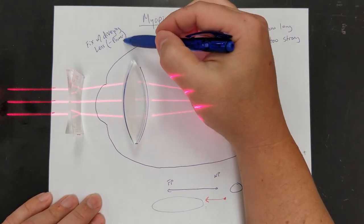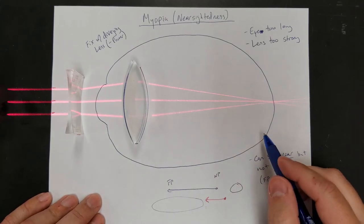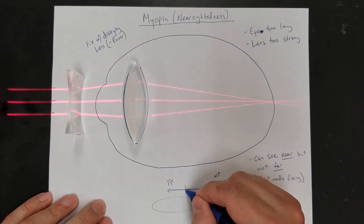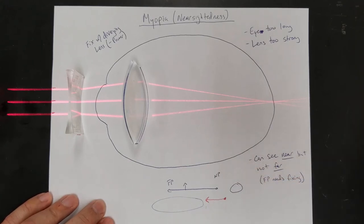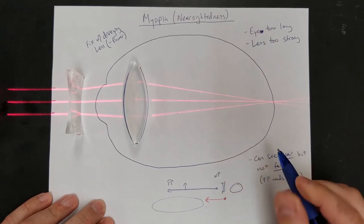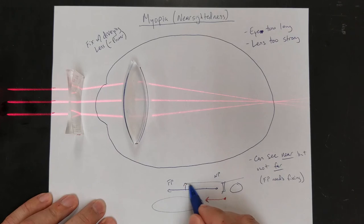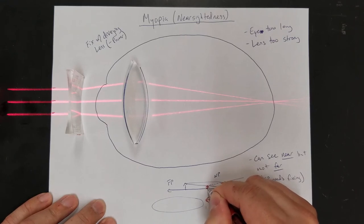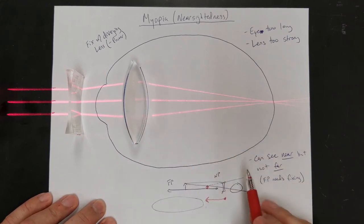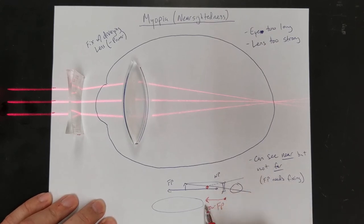Diverging lenses have negative power because they cannot create real images. What the diverging lens does is take a distant object and create a virtual image at your far point — wherever your far point is. Your eye then takes that virtual image and focuses it on the back of your eye. So the diverging lens doesn't change your eye at all; it just creates an image at your far point that your eye can handle.